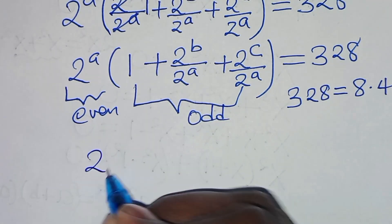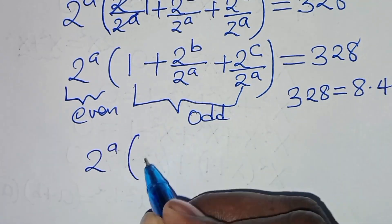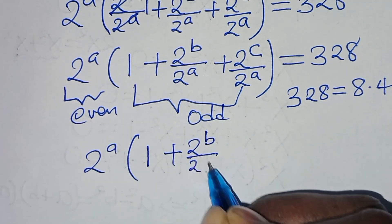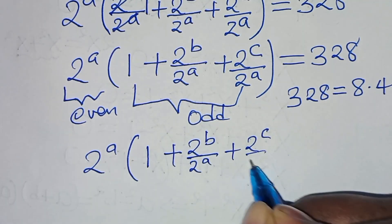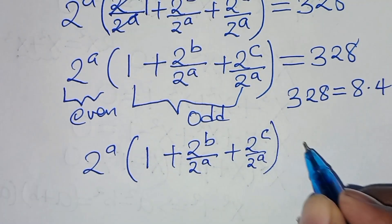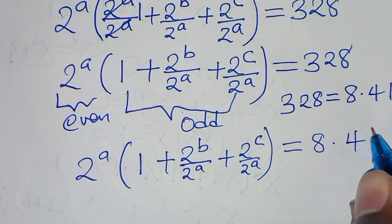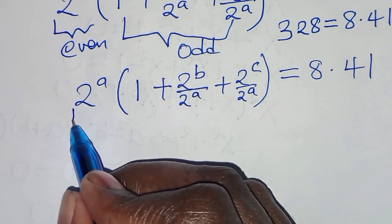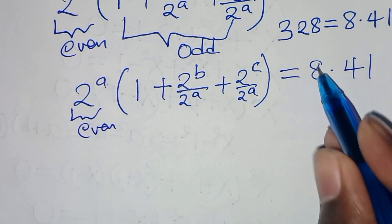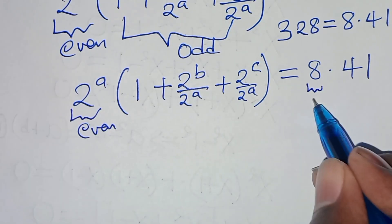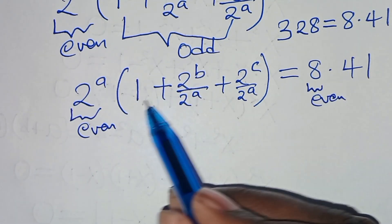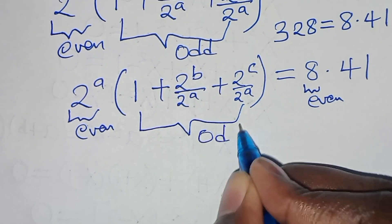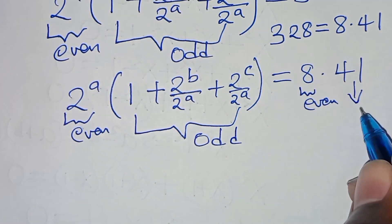Substituting, we have 2^a times (1 + 2^b/2^a + 2^c/2^a) = 8 × 41. We can compare: the first part is even and 8 is also even; the parenthetical part is odd and 41 is also odd.